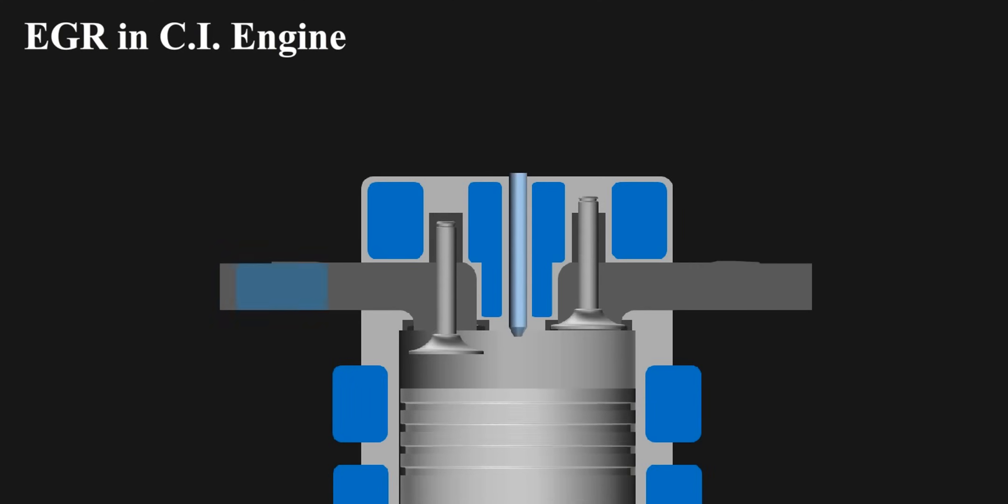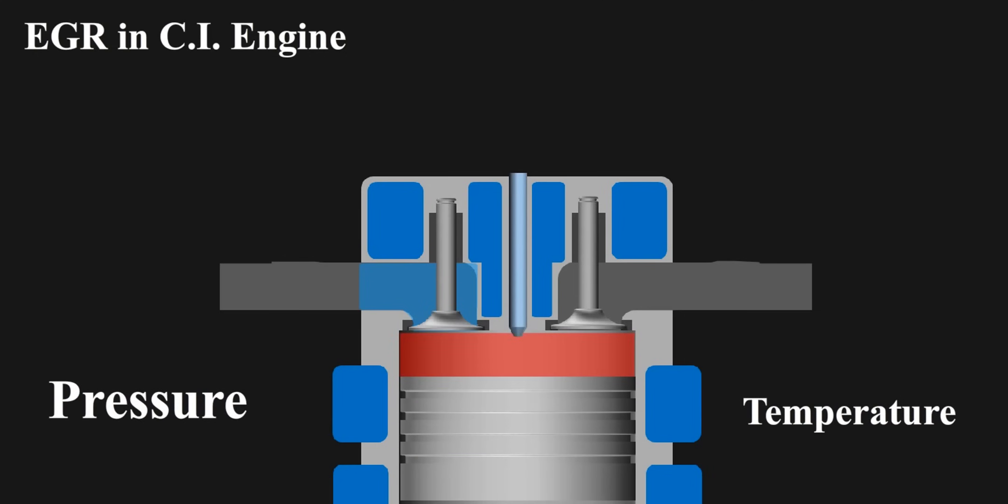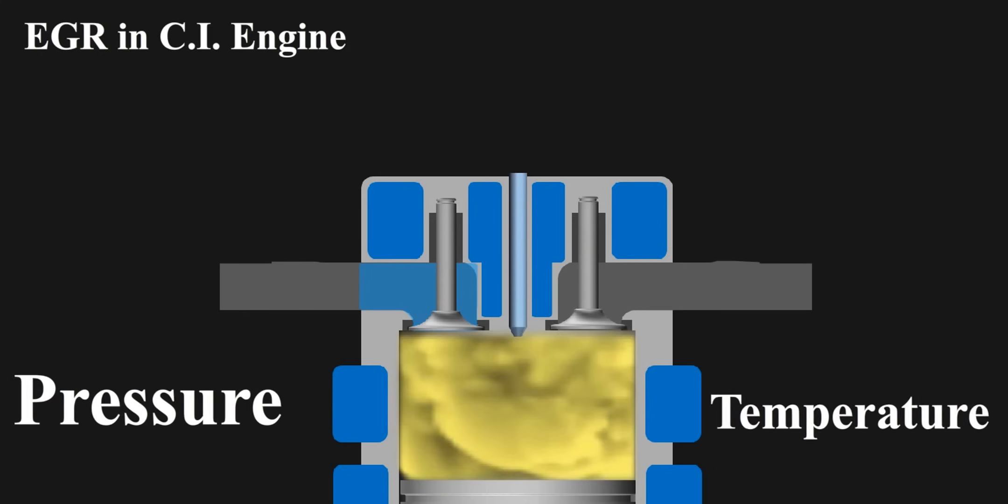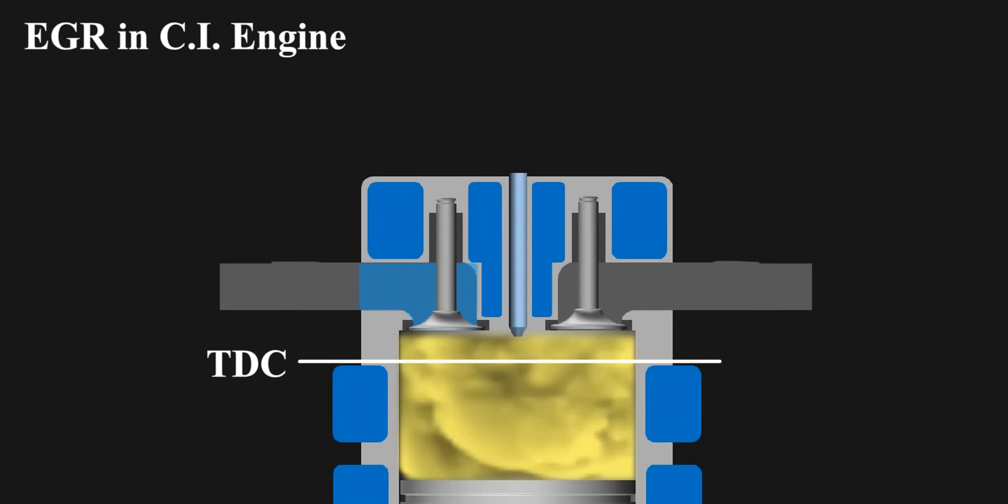Let's first see why we need EGR in CI engines. In a CI engine, at intake stroke, all of the cylinder is filled up with fresh air. Then, all of it is compressed. This compression increases the pressure and temperature inside. So when the fuel is injected, it auto ignites and starts burning. Now the oxygen in the air is utilized to complete the combustion. The burning of the fuel increases the temperature and pressure even more, so the piston gets pushed down to BDC, and hence we get the power.